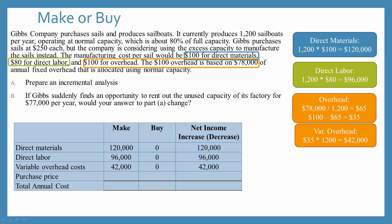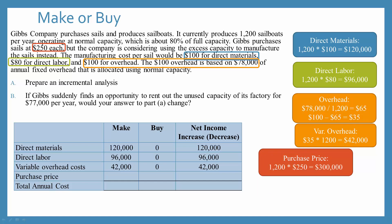If they choose to buy, they would not have those variable overhead costs, which therefore causes an increase in net income. Now, of course, if they choose to buy the sails, they have to pay for the sails. The paragraph tells us that the purchase price is $250 each for the sails. So if we take that times the 1,200 sails, our total cost to buy the sails is $300,000. If we make, that cost is zero; if we buy, that cost increases to $300,000, and that increase in cost causes a decrease in net income.